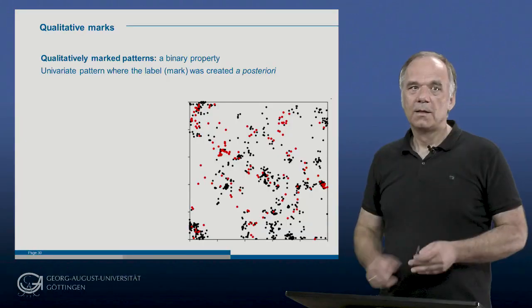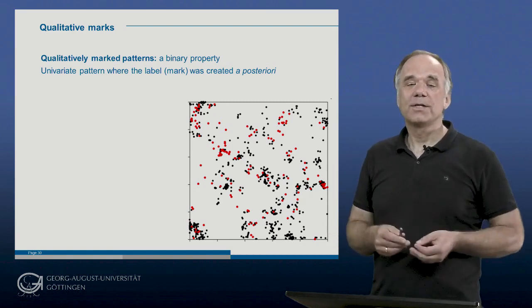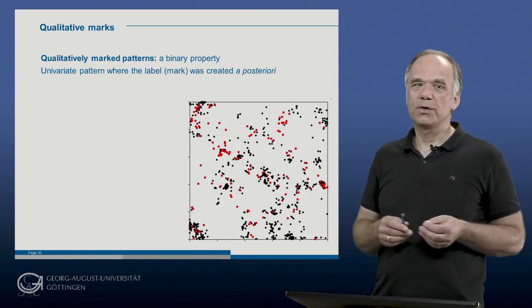Welcome back to my presentation. We will now turn our attention to a second important data type in ecology: qualitatively marked patterns. In this case, we have a univariate pattern